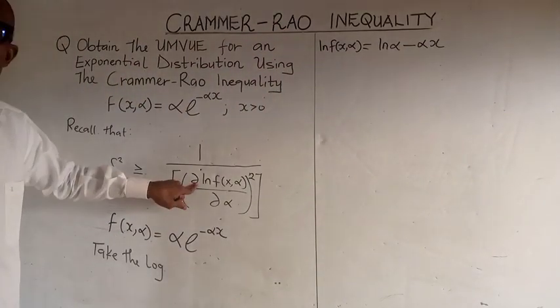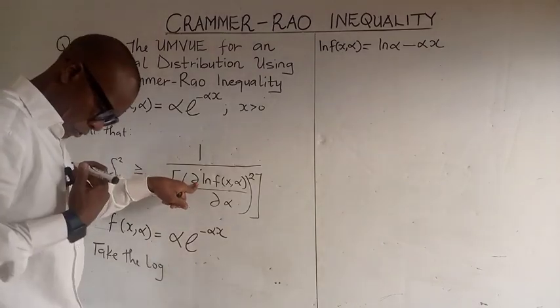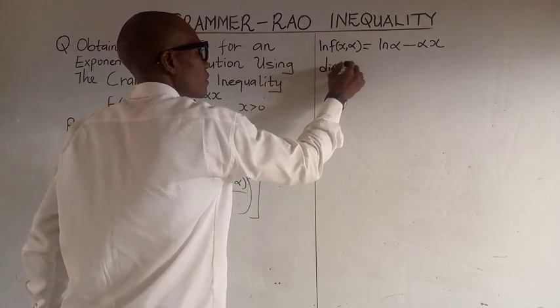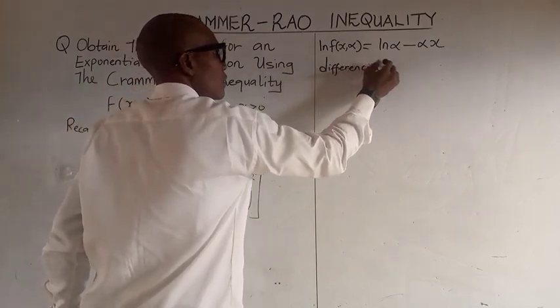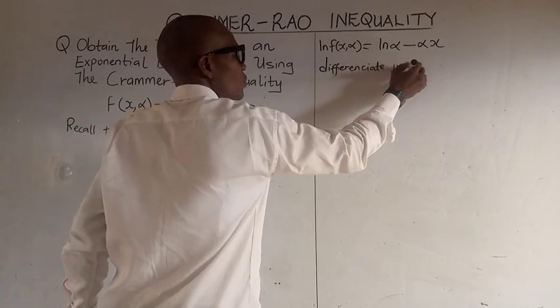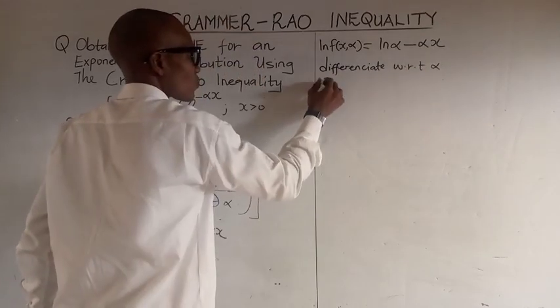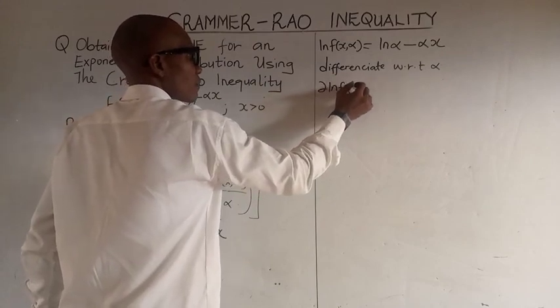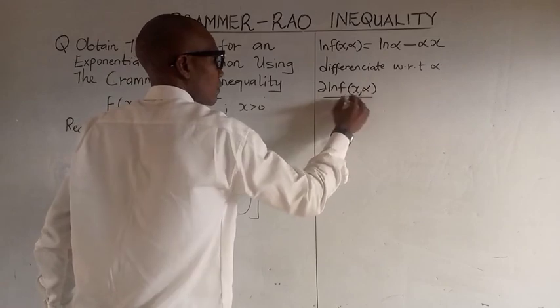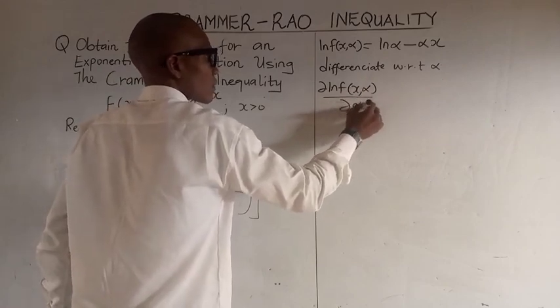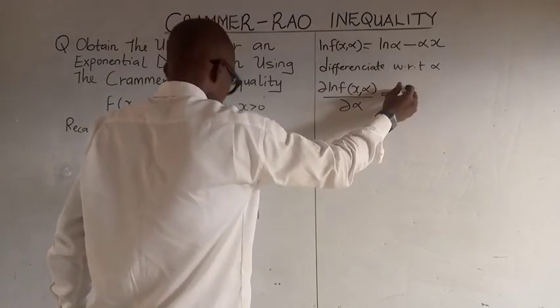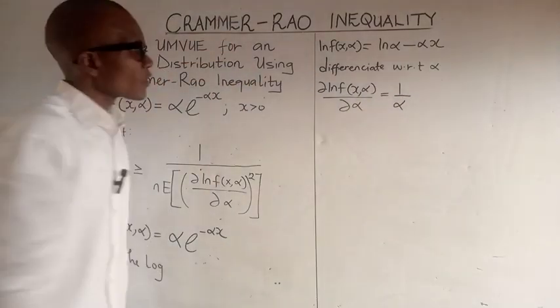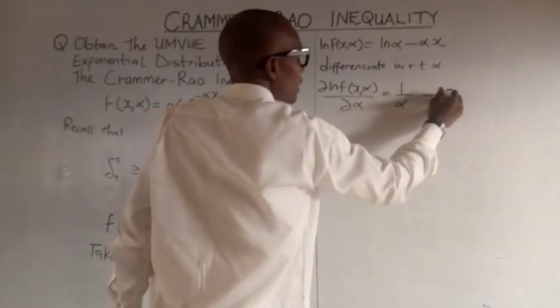What next? We take the differential. We differentiate with respect to alpha. To differentiate this, we get 1 over alpha. If we differentiate this, we get minus x.